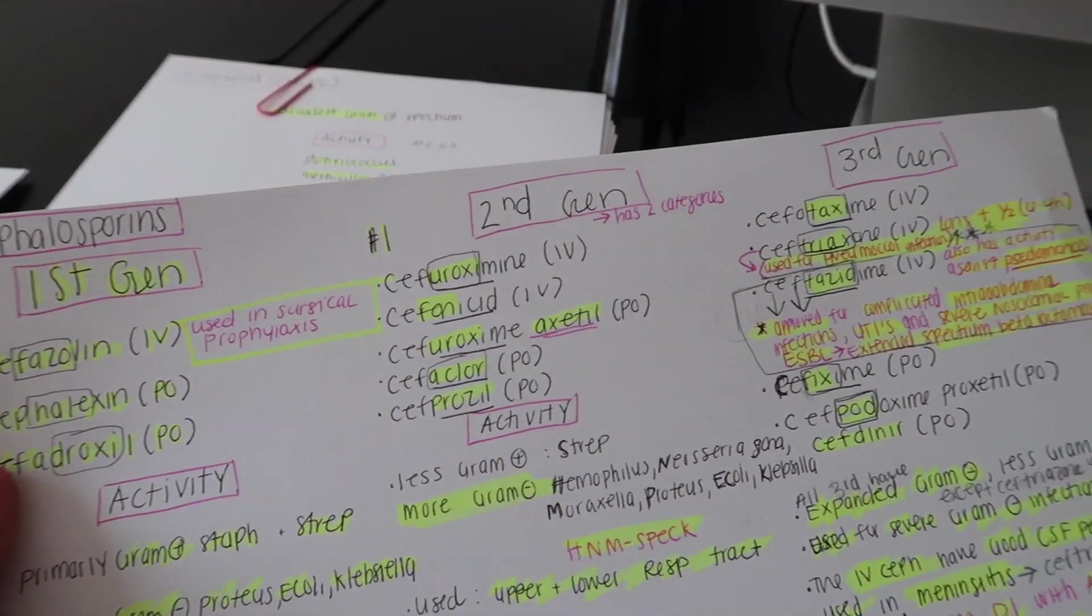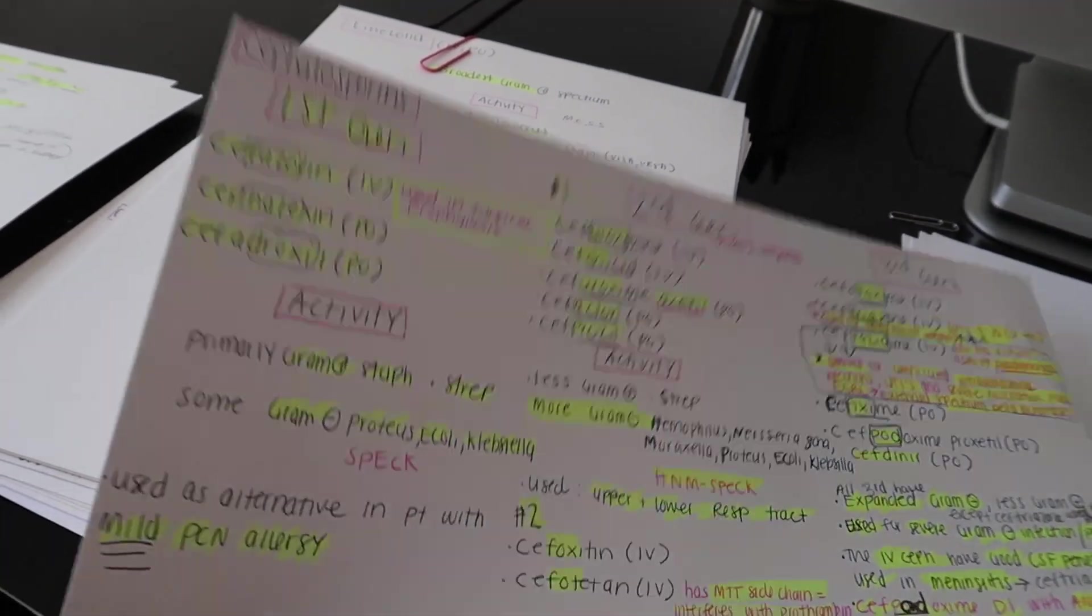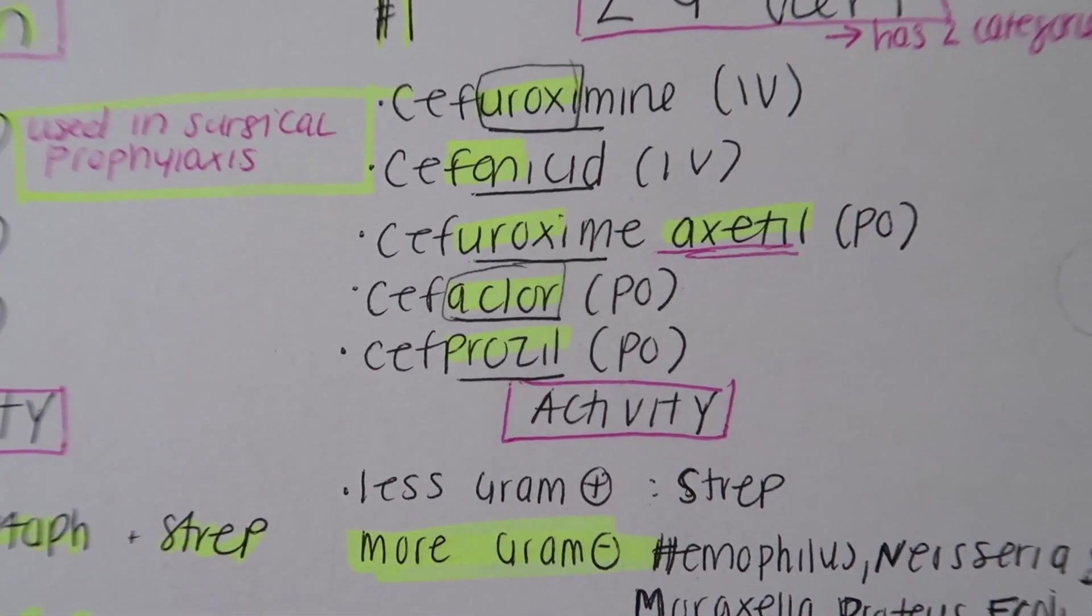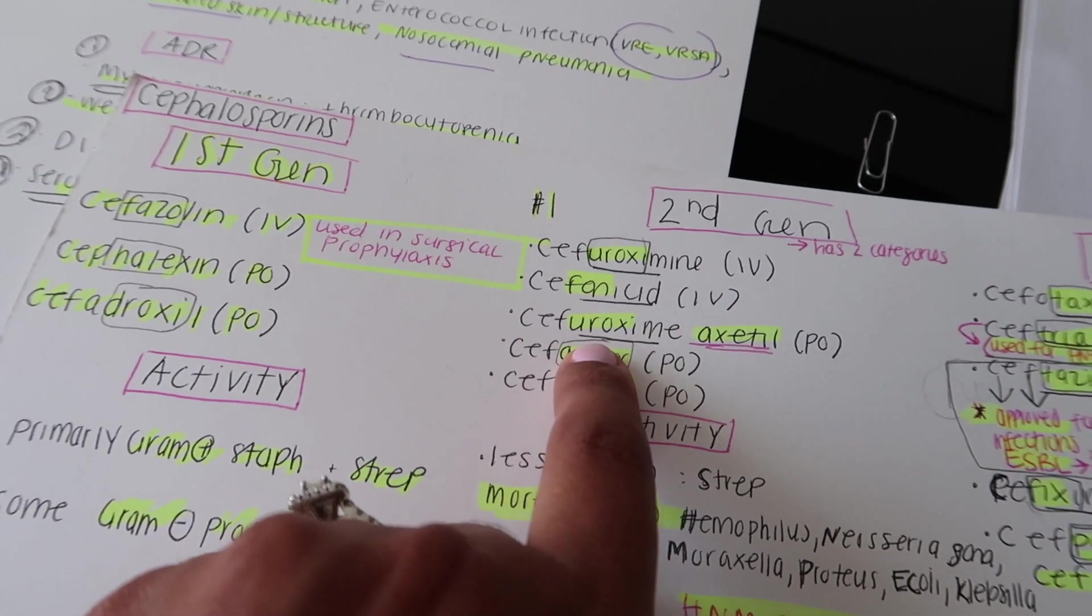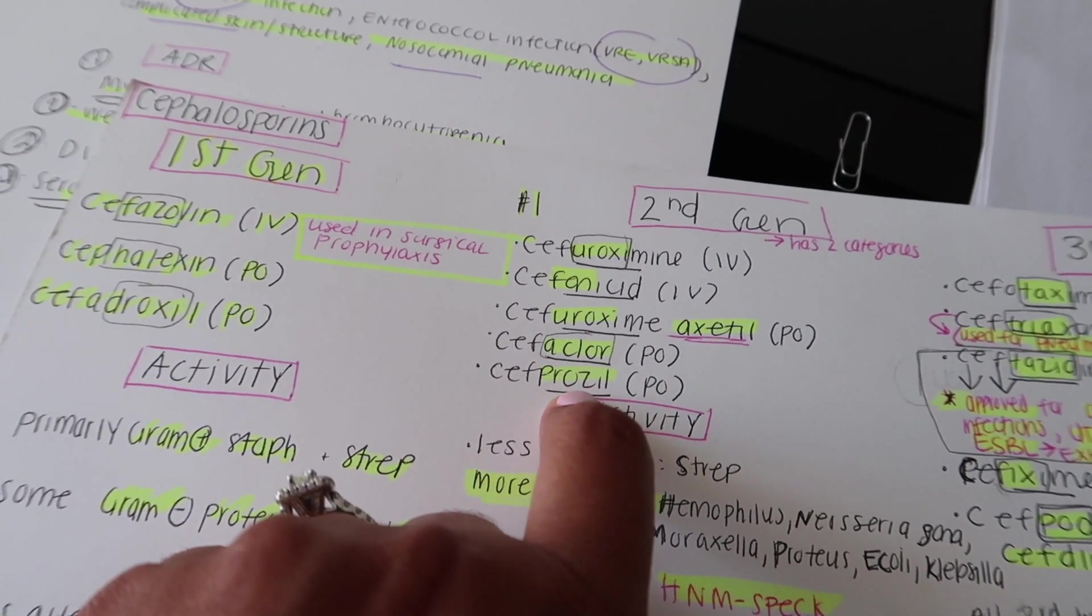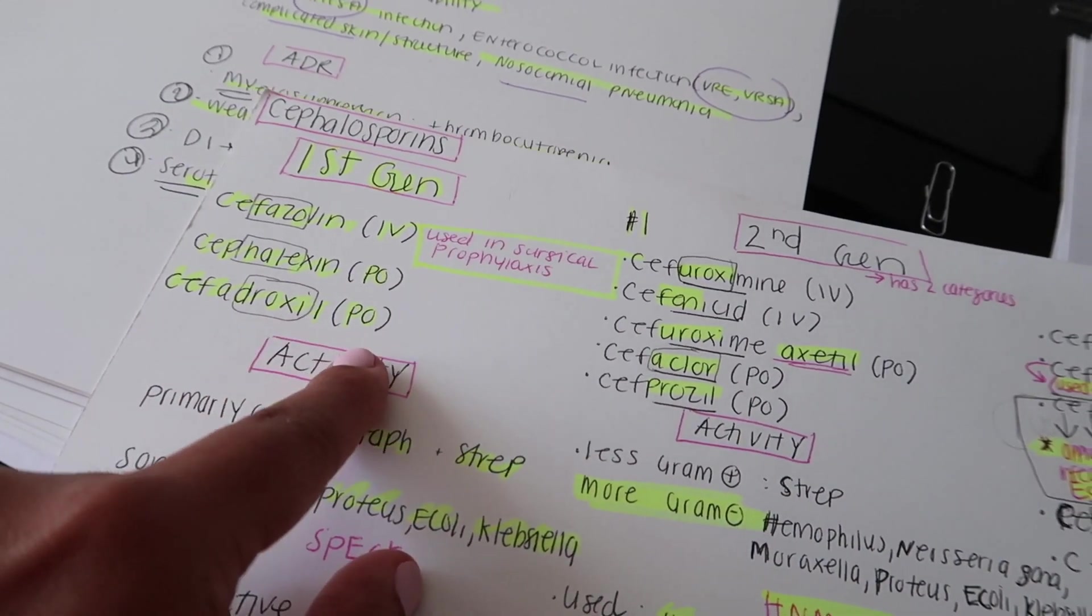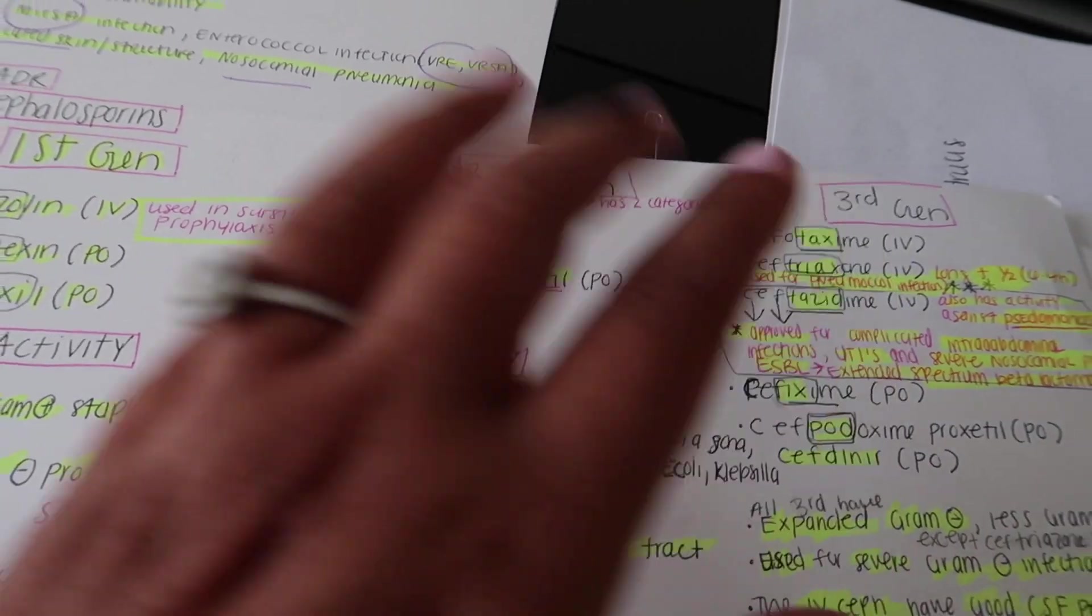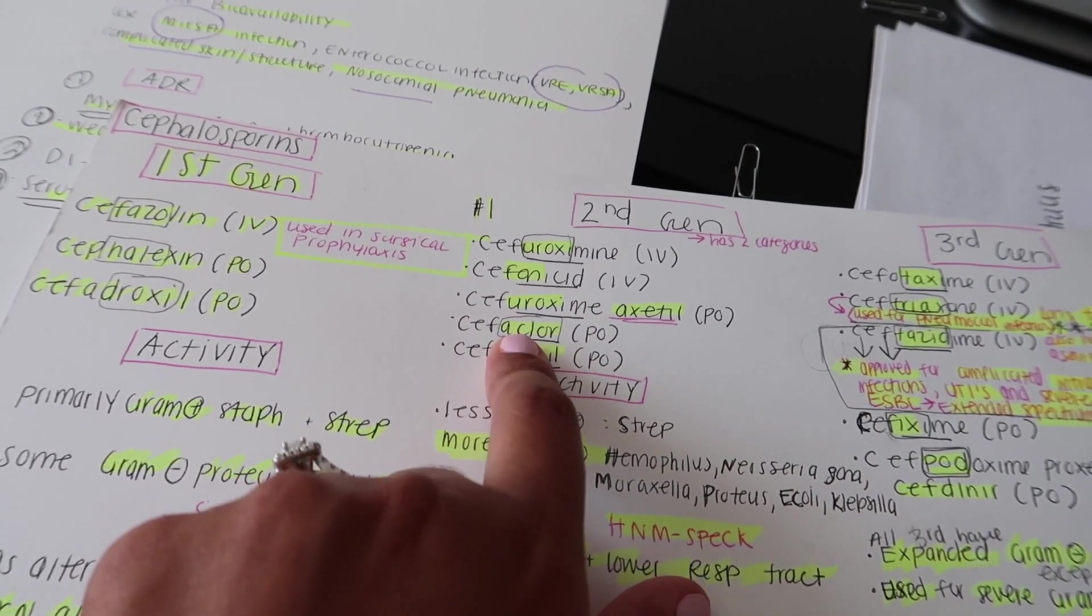Here I have my cephalosporins: the first generation, second generation, third generation. I wanted to see these side by side just because I knew this class belonged together. The class of drugs and the drugs sound very similar, so I would highlight the middle of it and just memorize the middle part of the drug. So my second generation was roxy, fawn, uroxy, achlor, prozil. But that was the only way, because all of these—cefazolin, cephalexin, cefadroxil, cephalothin, cefuroxime—how was I going to separate them from first to second to third generation? You had to find a way, and my way was just memorizing the middle part of each word.